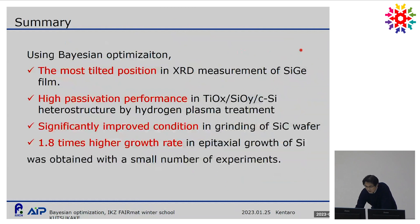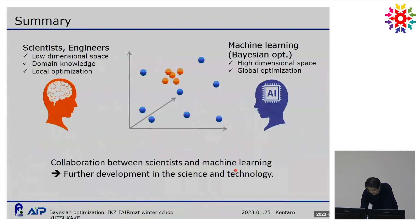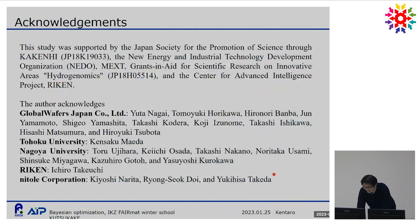Let me summarize my talk. As I demonstrated, by using Bayesian optimization we can obtain much better results with a small number of experiments. I also emphasized that not only machine learning, but also scientists' and engineers' domain knowledge will be helpful to get optimized results. My message is that collaboration between scientists and machine learning will lead to further development in science and technology. Thank you for your attention.